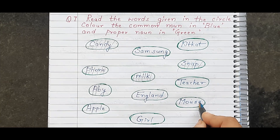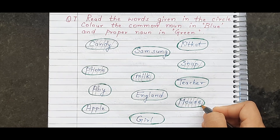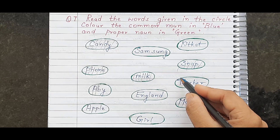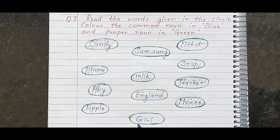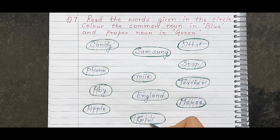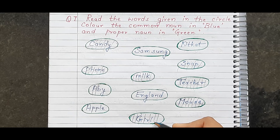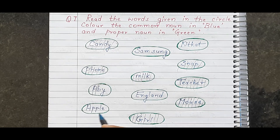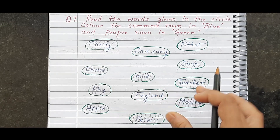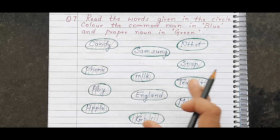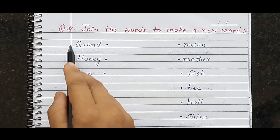'Mouse' — mouse is a common noun, we don't know which specific one — color it blue. 'Teacher' — common noun, color it blue. 'Girl' — her specific name is not written, only 'girl,' so this is a common noun — color it blue. 'Apple' — common noun — color it blue. This is how children complete the common noun and proper noun worksheet.